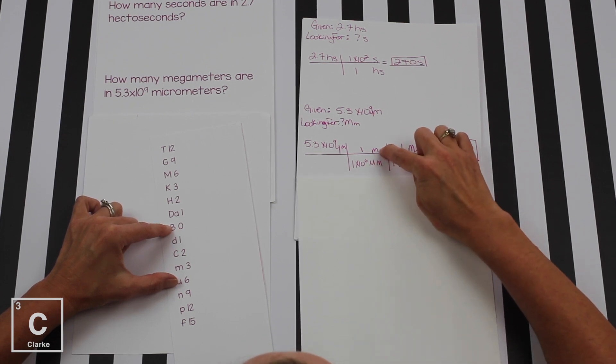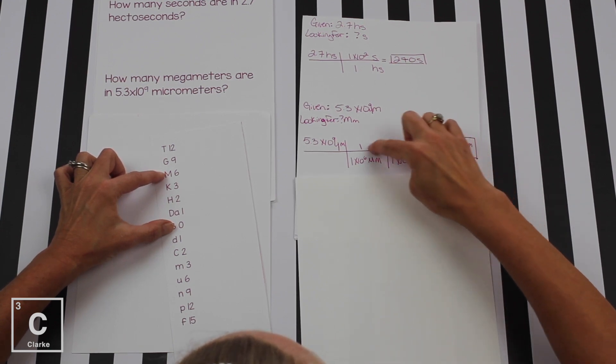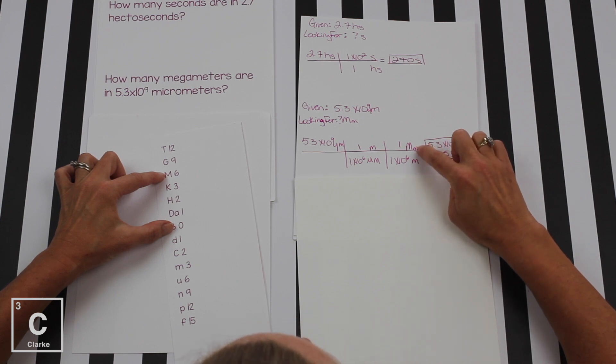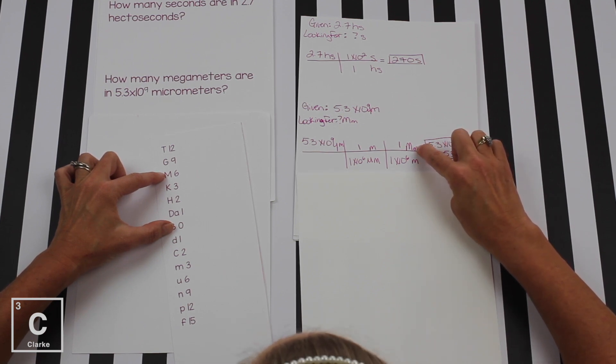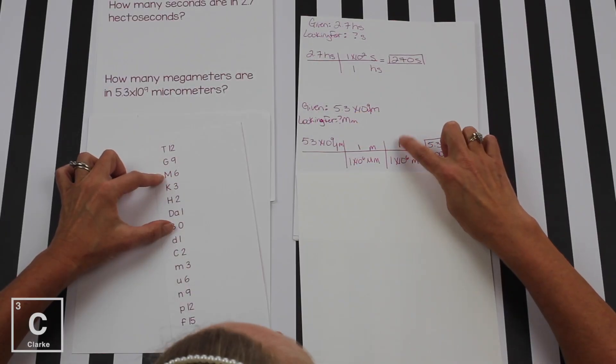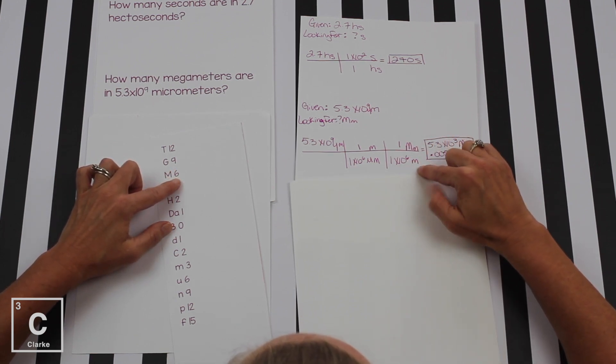Now we have meters on top. We want megameters on top, so we need another conversion factor. Now we're going to go from our base to mega. So we're going to bring our meters down. They've got to stay diagonal. And we're going to put megameters on top. That's what we're looking for. The one good thing about when you bring the base unit down to the bottom, you get to put whatever unit you need on top. Mega is on top, that's why it got a 1. And then we're going to give it 6 to the base unit, 1 times 10 to the 6 meters.